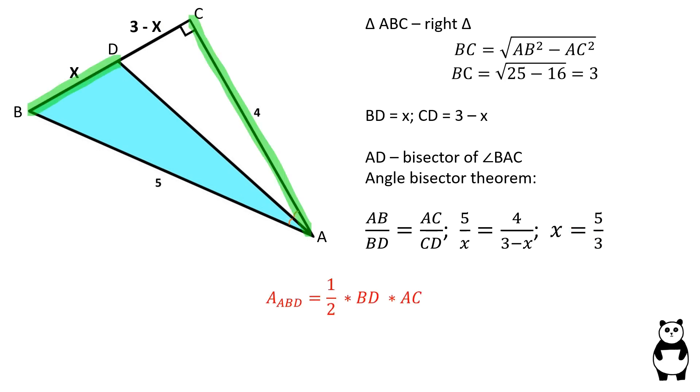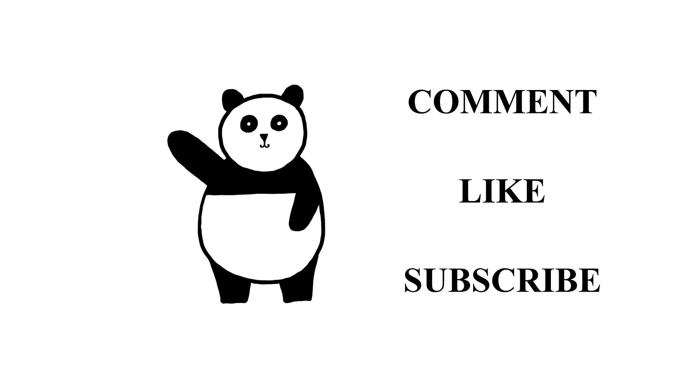The area of a triangle is equal to half the product of its base and height. The area of triangle ABD is equal to half the product of BD and AC, which is equal to 10 over 3 square units. If you found this video helpful,